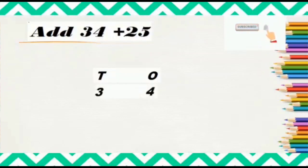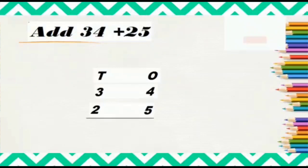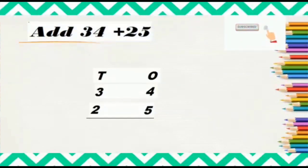Next, 25. So 2 tens and 5 ones. Here we need to add these numbers according to their place value, and we will always start adding from the ones place. And never forget to write the plus sign as we are doing addition.